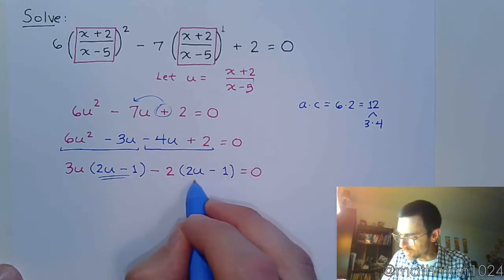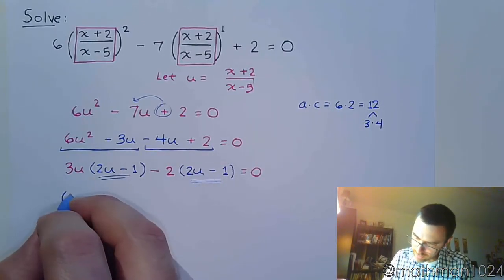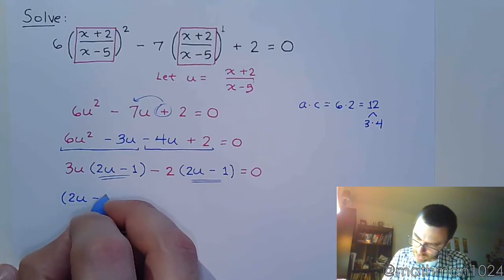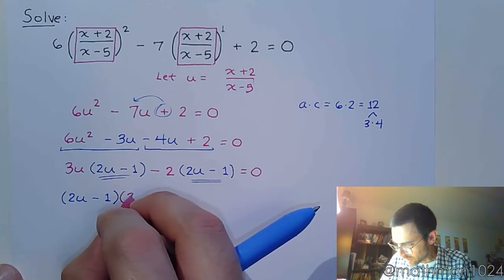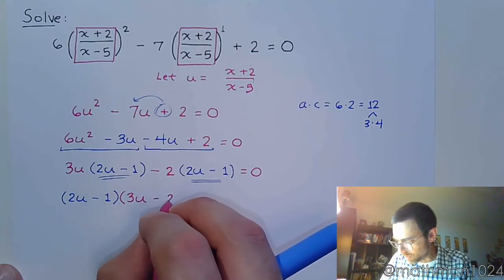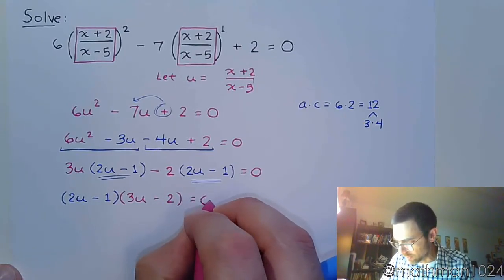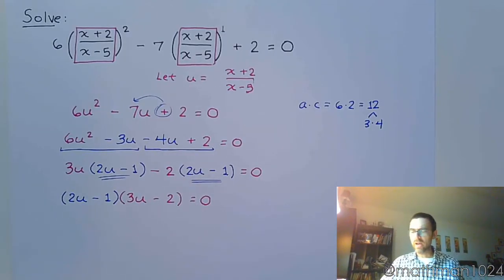So we can see that 2u minus 1 is the same. So 2u minus 1 times 3u minus 2 equals 0. So right now, the most difficult thing that we've had to do is to factor that polynomial.